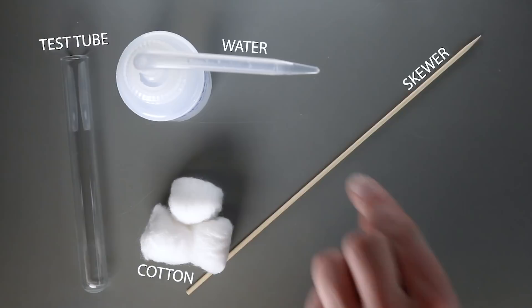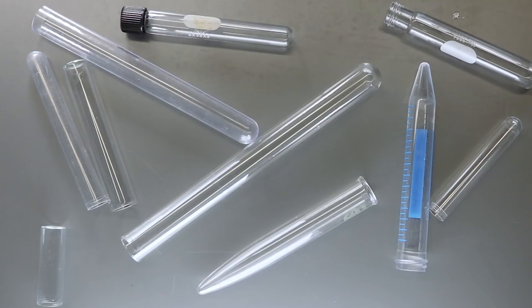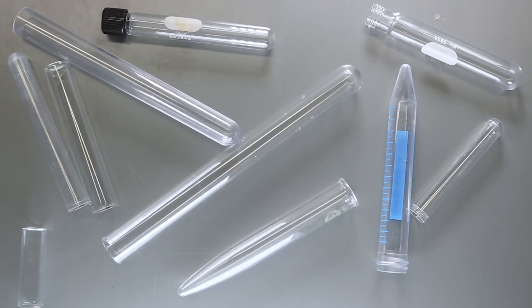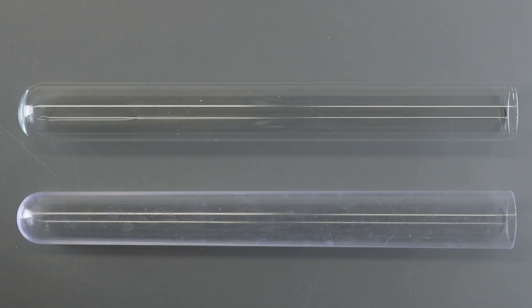The first step is to select an appropriate test tube. Test tubes are ubiquitous tools used in laboratories and pharmacies for scientific applications. Because of this, there are many different kinds of test tubes available for purchase. We recommend using test tubes with a diameter between 16 and 20 millimeters, and at least 100 millimeters in length. Our lab uses Fisher Brand's disposable culture tubes, which are 18 millimeters by 150 millimeters long.